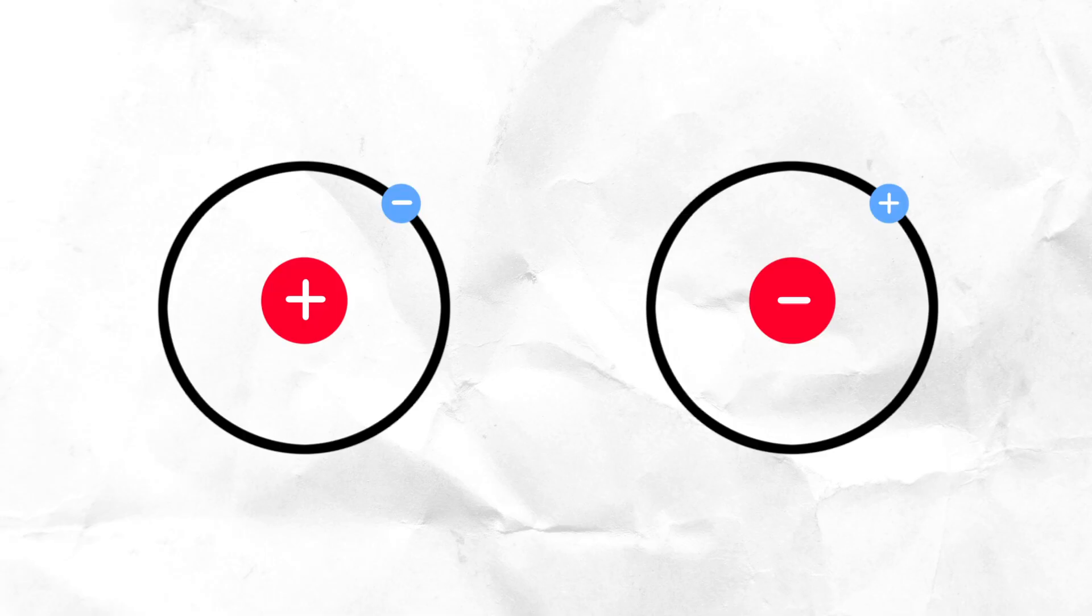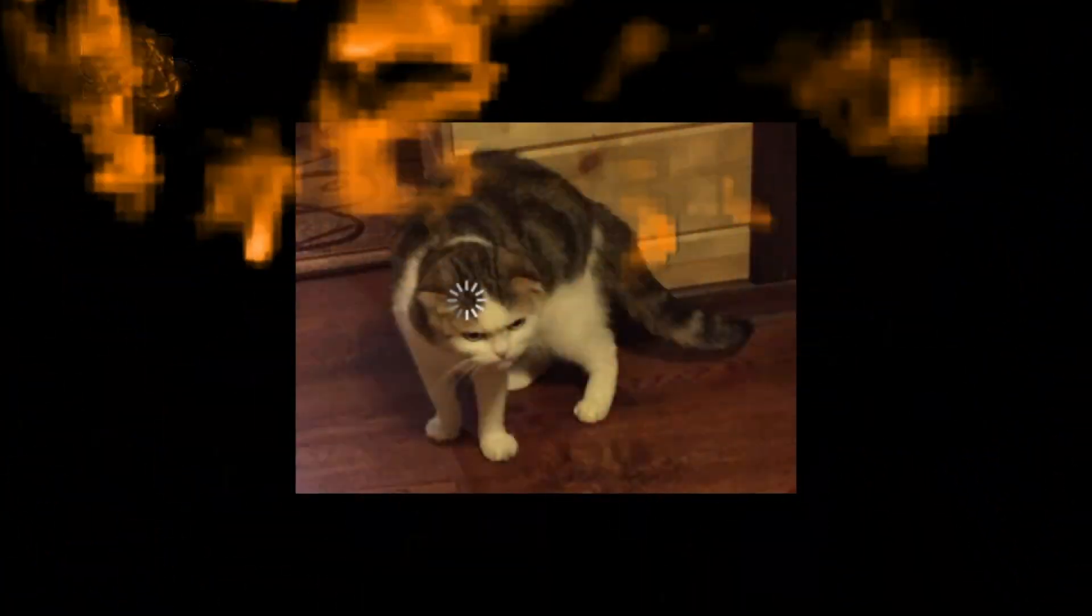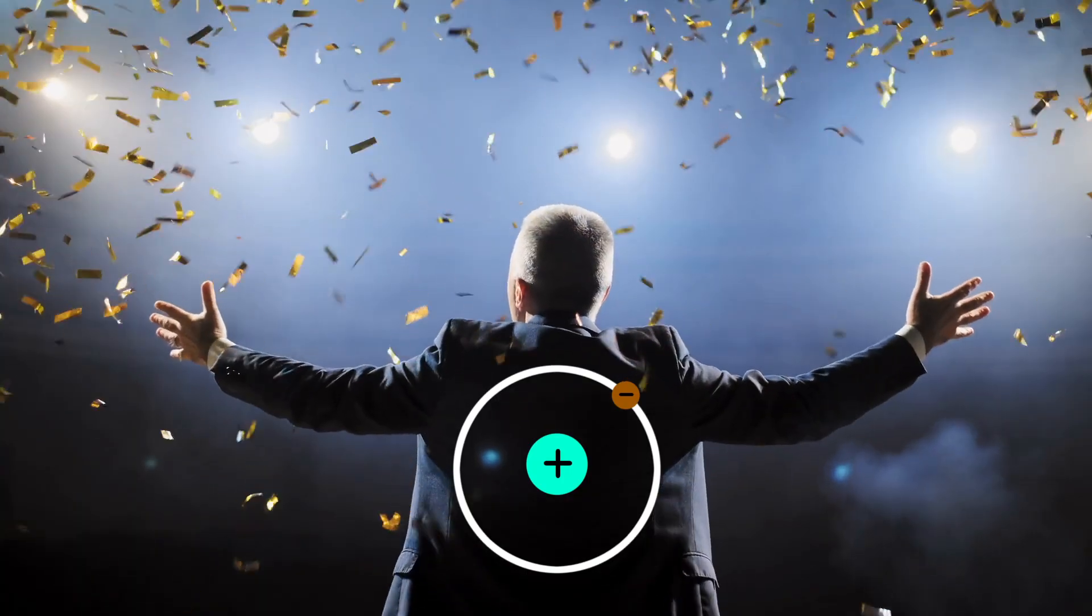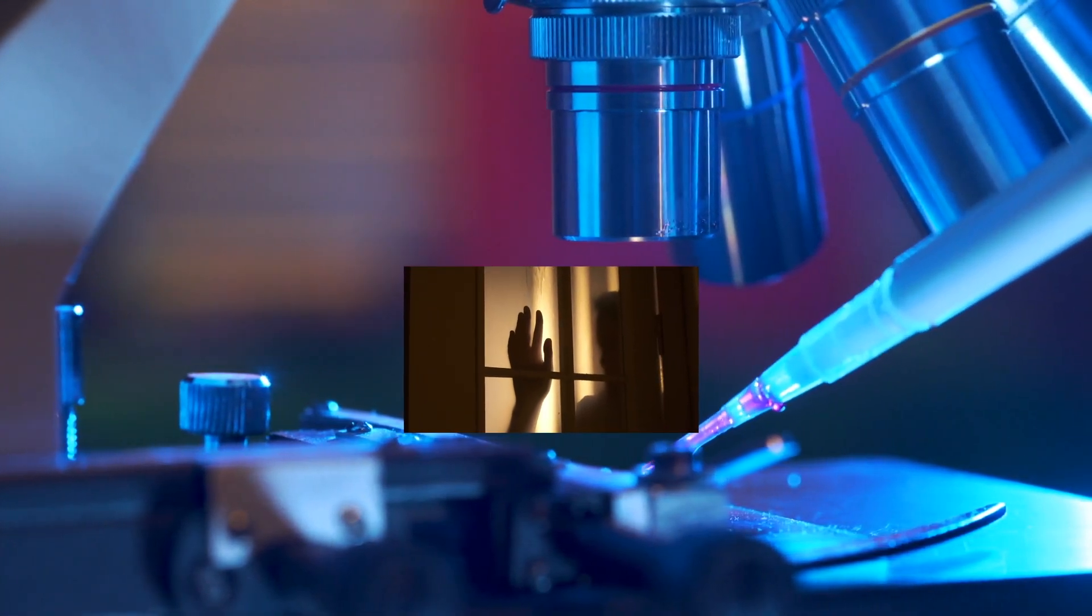If matter and antimatter were spawned in equal amounts, the net result should have been an empty universe devoid of matter, but alas, normal matter came out on top, leaving its inverted cousin banished to the constraints of laboratories.